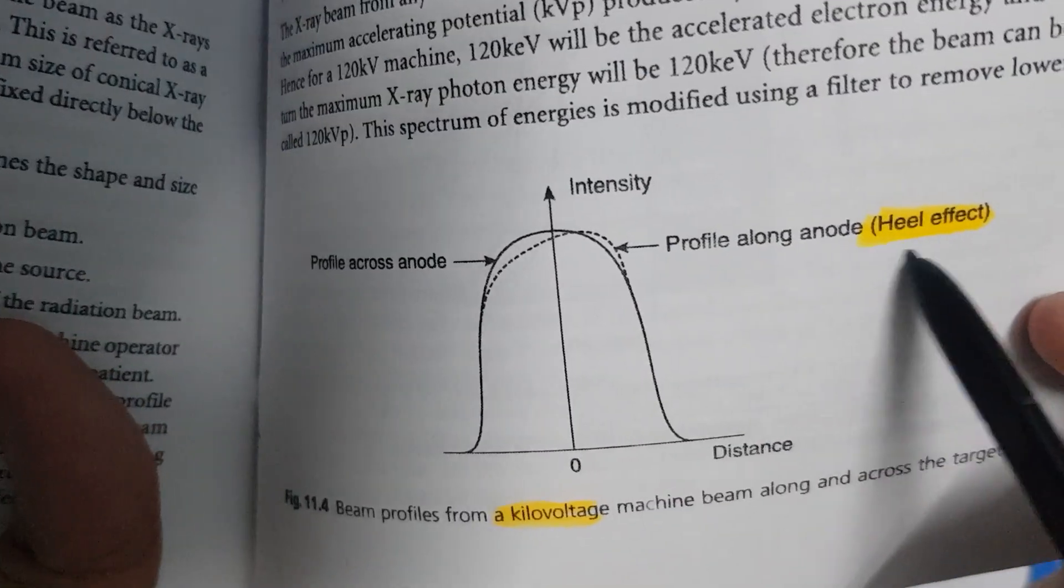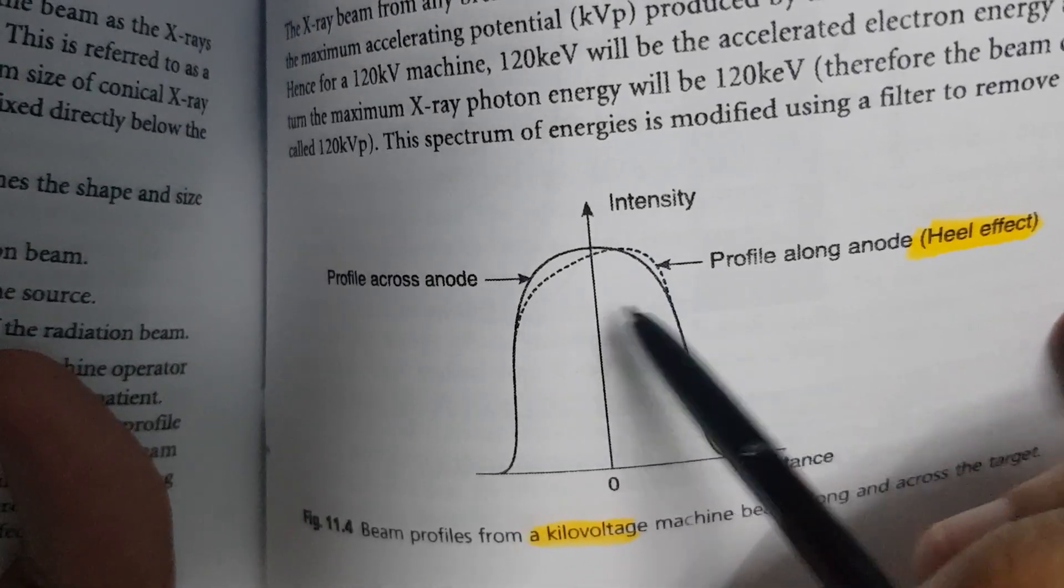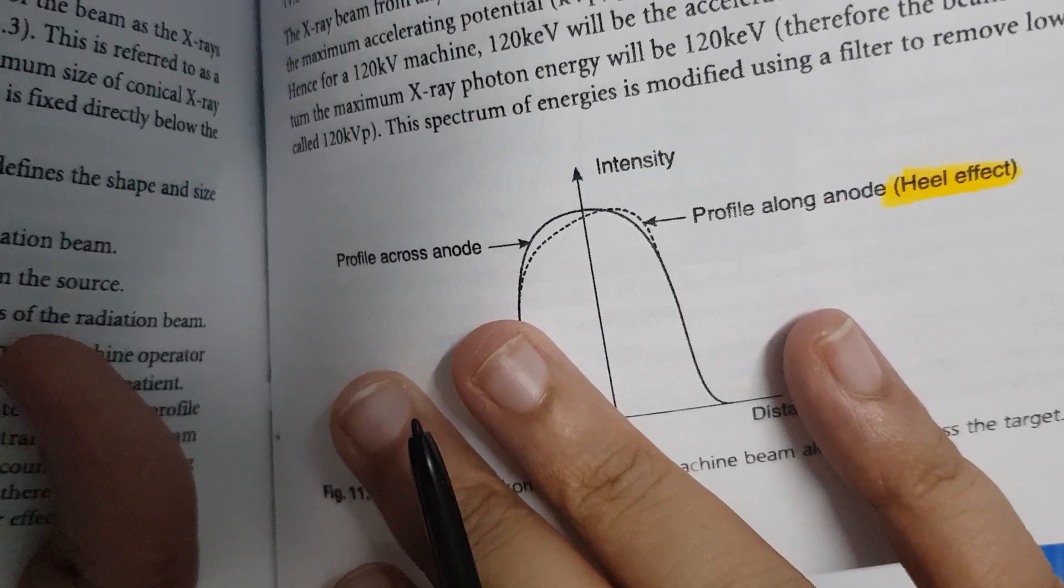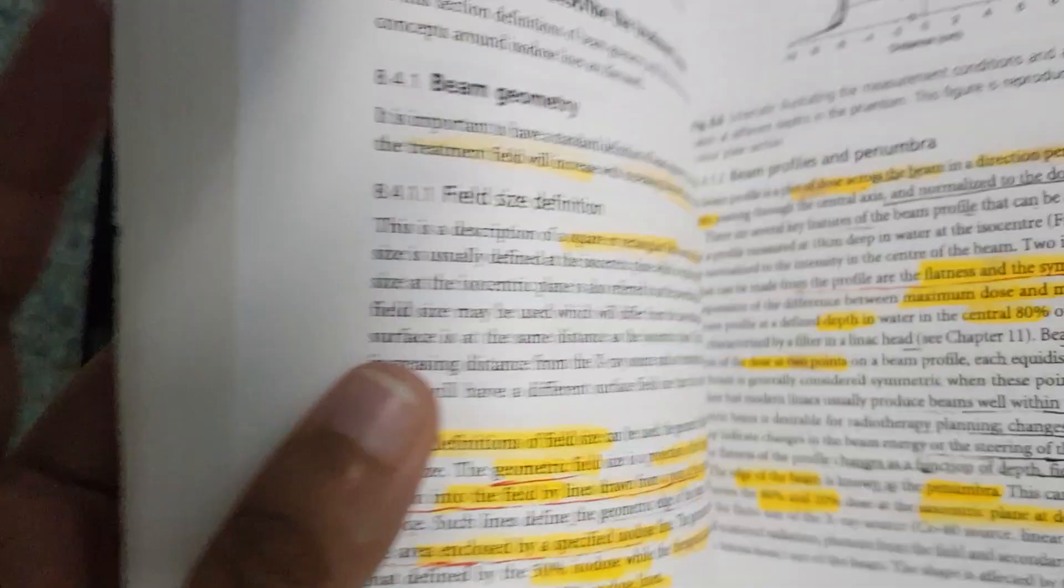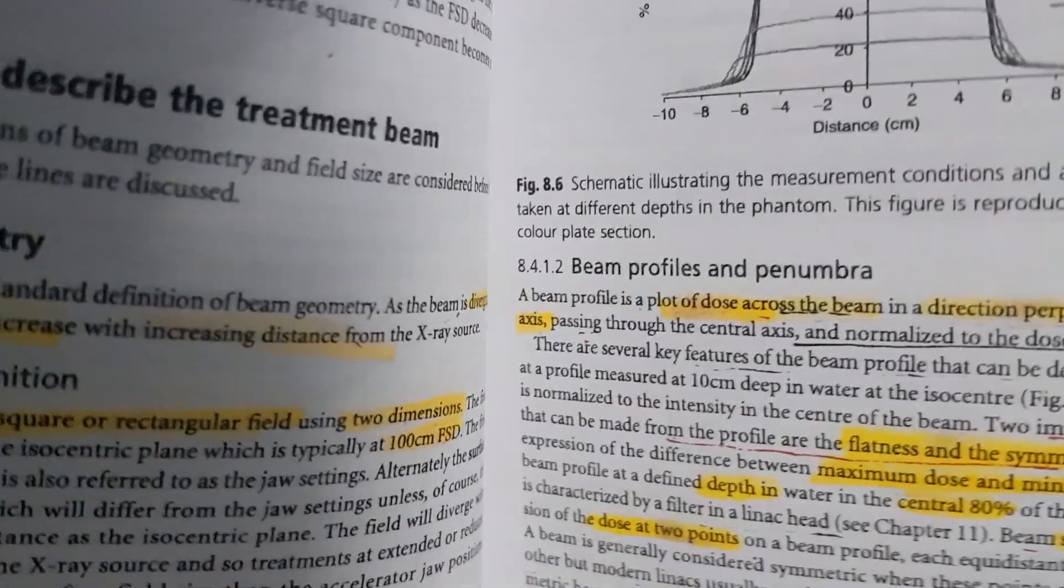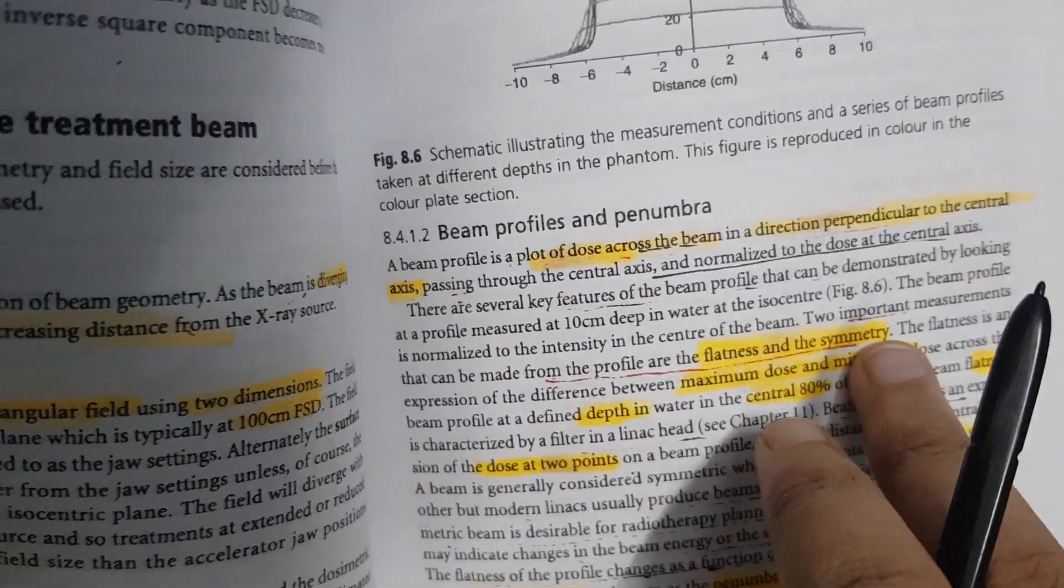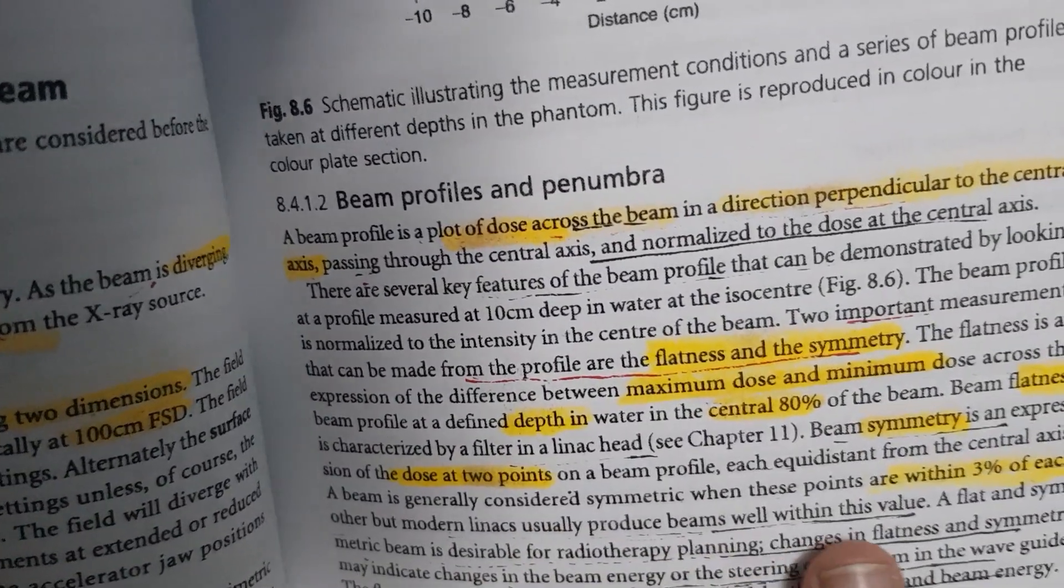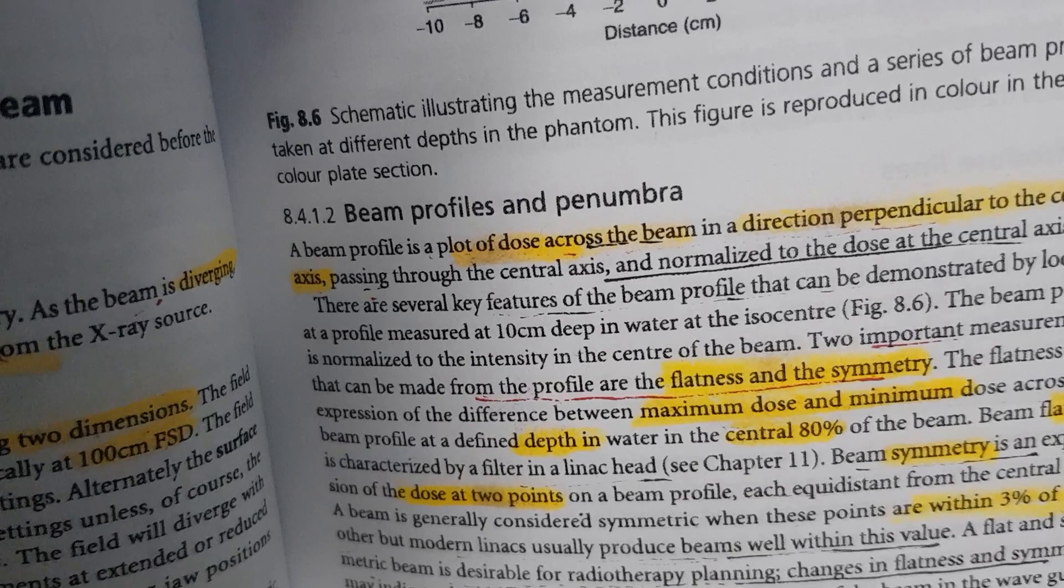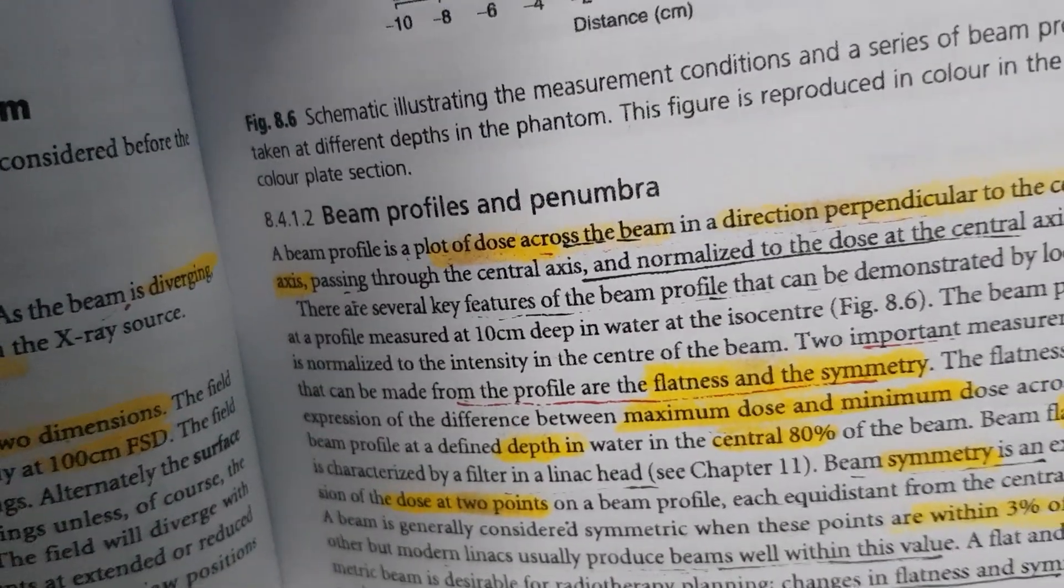If you consider this kilovoltage beam profile, then we can see that there is something called as heel effect where the symmetry is not proper. So you can see the flatness is also lost, the symmetry is also lost. That's the difference. That's why we need proper flatness and symmetry for us to know how well these are functioning for the desirable radiotherapy planning.